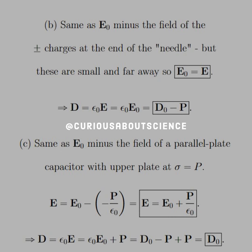Now similarly, we can apply this for part B, which is the same as E naught minus the field of the plus or minus charges at the ends of the needle, but those are small and far away, so E naught and E are equivalent. Therefore, our electric displacement is just D naught minus P.